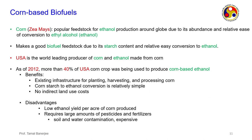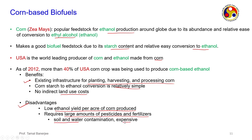Corn-based biofuels: corn is a popular feedstock for ethanol production due to its abundance and relative ease of conversion. It has a high starch content making it easy to convert to ethanol. The USA is the world's leading producer of corn ethanol — as of 2012, more than 40 percent of the US corn crop was used to produce corn-based ethanol. Benefits include existing infrastructure for planting, harvesting and processing, simple starch-to-ethanol conversion, and no indirect land use cost.